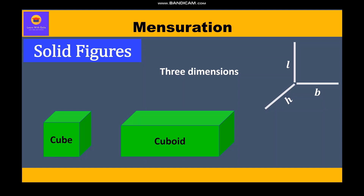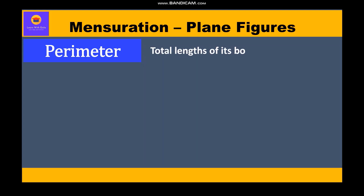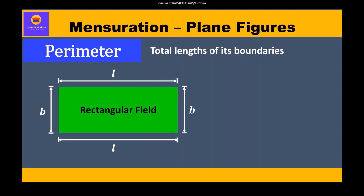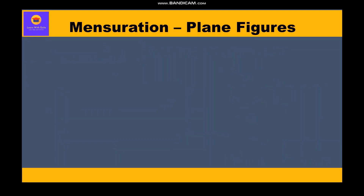Let us recapitulate some important concepts related to plane figures. First, perimeter: the perimeter of a plane figure is the total length of its boundary. For example, in a rectangular field, the sum of all sides is its perimeter — that is, length + breadth + length + breadth = 2(l + b). So perimeter equals twice of length plus breadth.